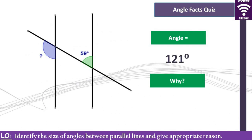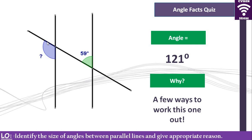What is this angle? It is 121 degrees. Why is it 121? One way: the angle opposite the question mark is 59 degrees, so subtract from 180 — 180 minus 59 gives 121. You can then say it is corresponding to that angle and justify from there. That's all you have to do.